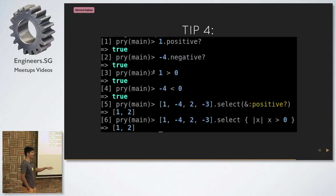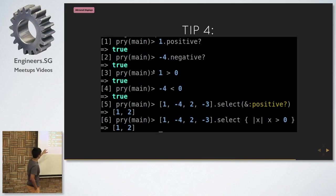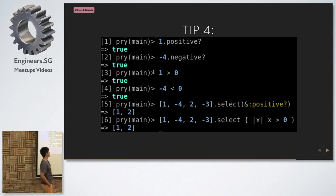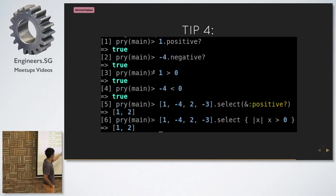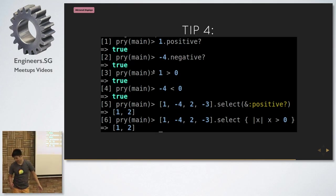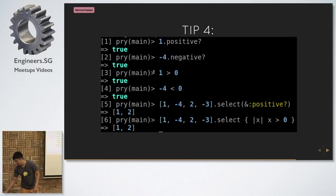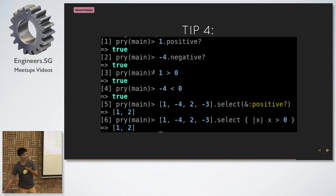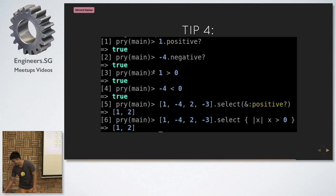Rails added it first, then they proposed it to Ruby, and Ruby merged it in. Something interesting you can do is use the ampersand operator and pass in the symbol `:positive?`. I'm not really a big fan of it — I'd rather just do it the other way, and honestly it's fewer characters to type. I have no idea why we need these kinds of methods.